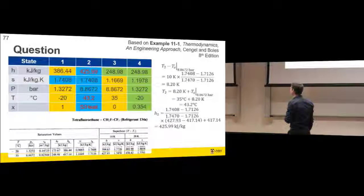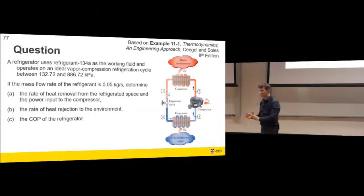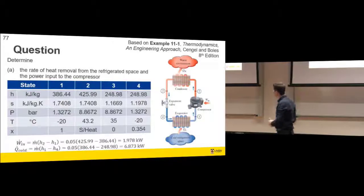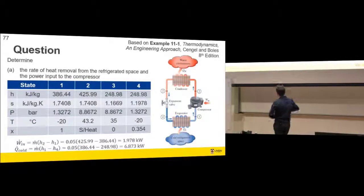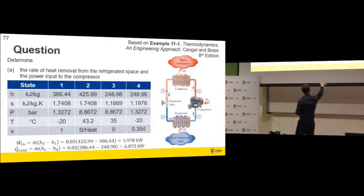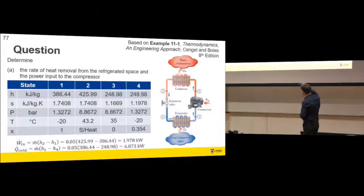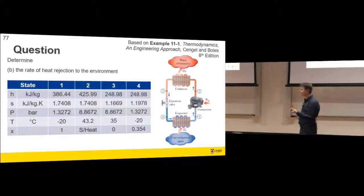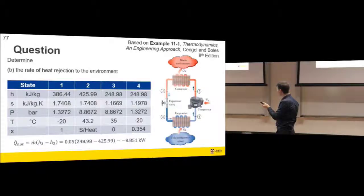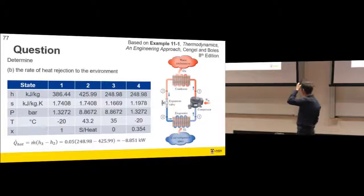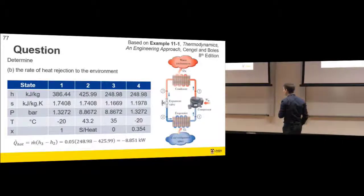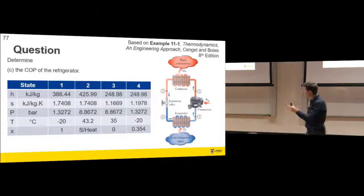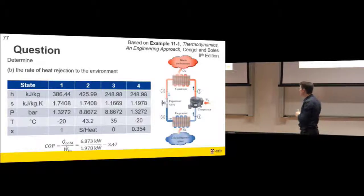Now, what were the things wanted? Rate of heat removal from the refrigerated space - Q-cold equals mass flow rate times the difference in enthalpies. Power input to the compressor - mass flow rate times the difference in enthalpies across the compressor. Rate of heat rejection to the environment equals mass flow rate times the enthalpy difference across the condenser, or equivalently Q-L plus work in. Coefficient of performance - what we want is heat drawn out of the cold space divided by work into the compressor. We get a COP of about 3.5.